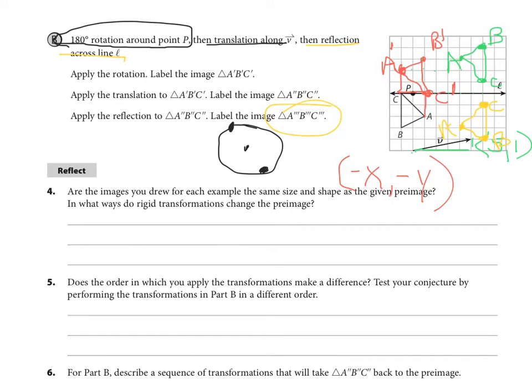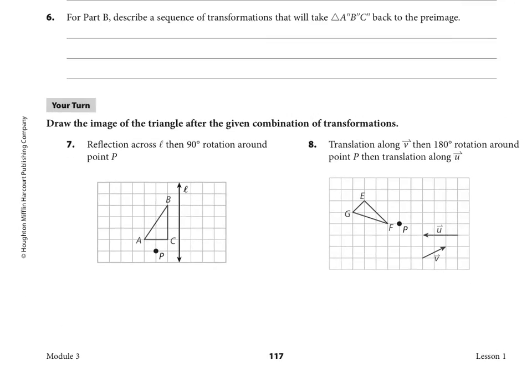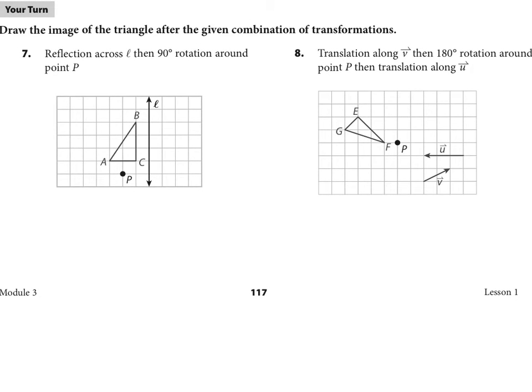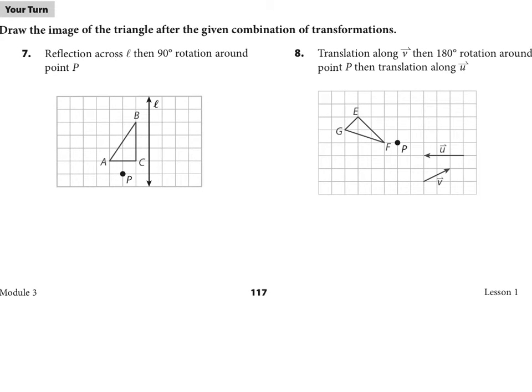Now let's go down to the bottom of this page. And I want you to try number seven. And then check back here after you're done. Now see what I've done here is I've done the first one in yellow. The first one is just reflected across L. And so A, B, and C are just the same distance across line L as the original one is. And then second, I did the 90-degree rotation around point P. Now remember, 90-degree rotation follows the rule negative Y, X.